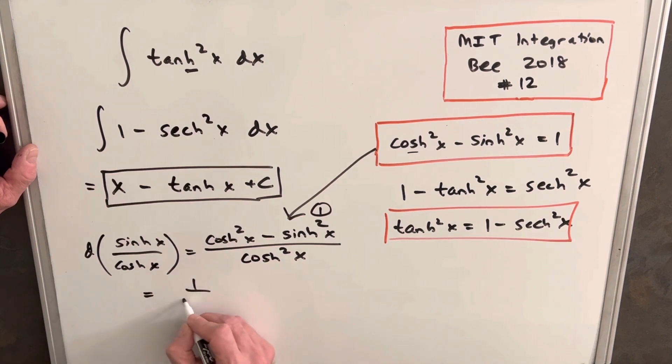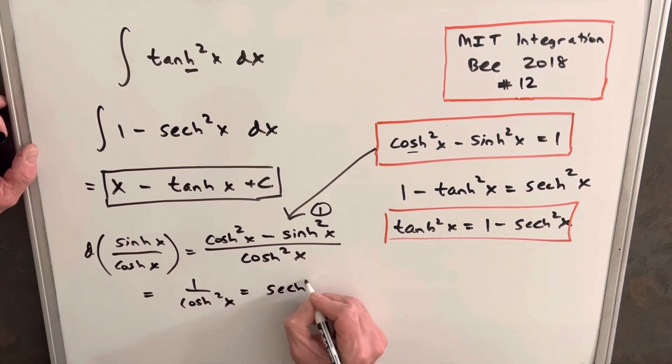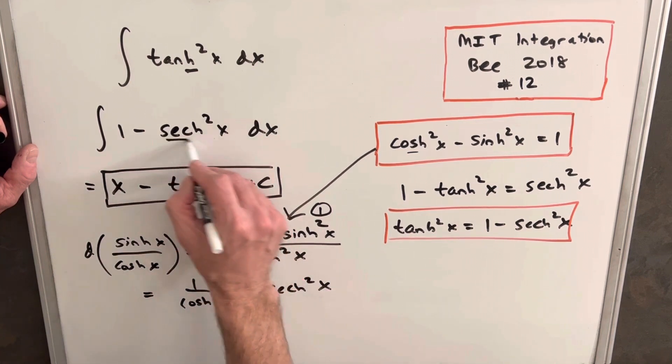So we're rewriting this, we have one over hyperbolic cosine squared. But that's just our hyperbolic secant squared, which is what we wanted to show.